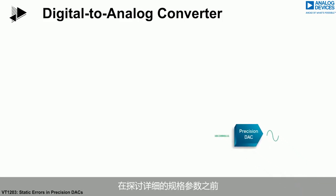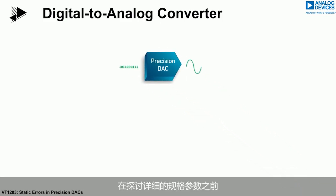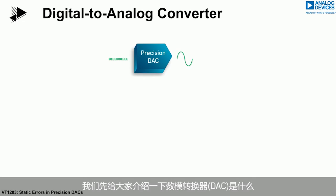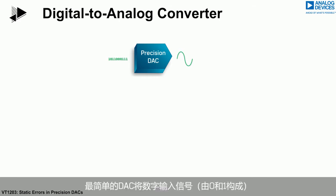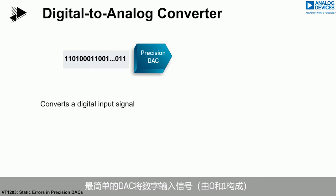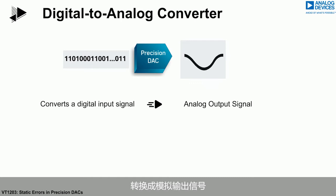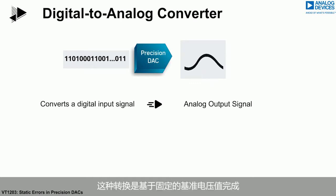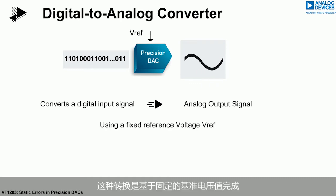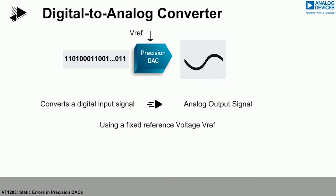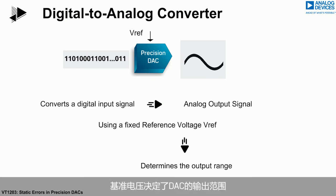Before diving into detailed specifications, we will quickly remind you what a digital-to-analog converter, or DAC, is. A DAC in the most simple form converts a digital input signal — ones and zeros — into an analog output signal. This is done with respect to a fixed reference voltage value, which determines the output range of the DAC.